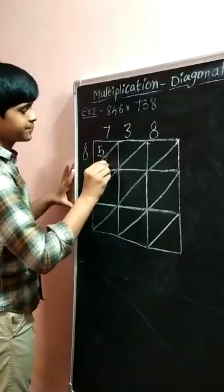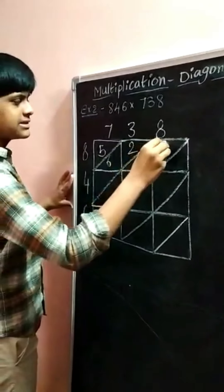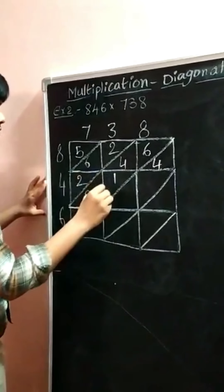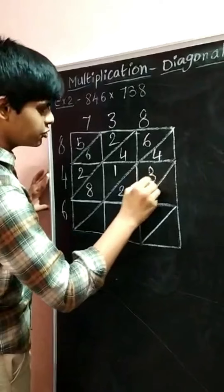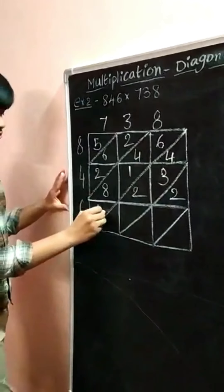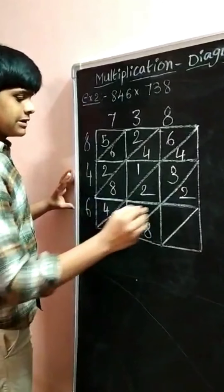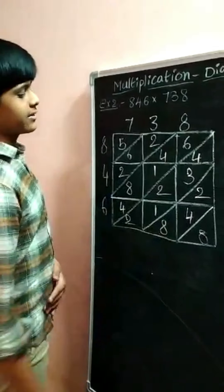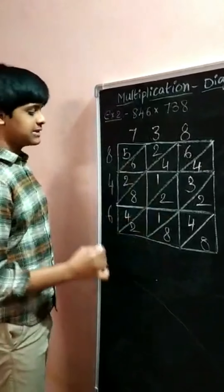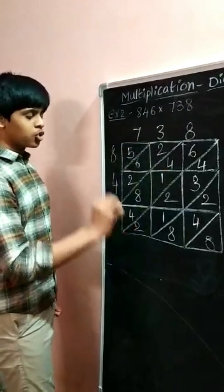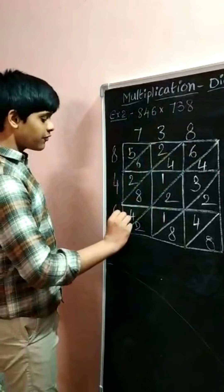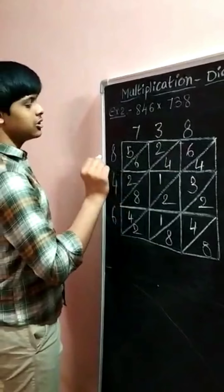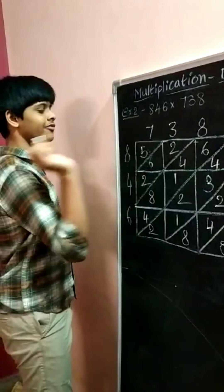8×7=56. 8×3=24. 8×8=64. 4×7=28. 4×3=12. 4×8=32. 6×7=42. 6×3=18. 6×8=48. In the first diagonal, 8 is there. In the second diagonal, 8, 4, 2 and 2 are there. In the third diagonal, 2, 1, 2, 3 and 4 are there. In the fourth diagonal, 4, 8, 1, 4 and 6 are there. In the fifth diagonal, 2, 6 and 2 are there. In the sixth diagonal, 5 is there.